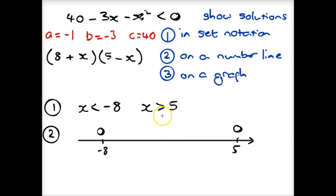If it was or equal to, we'd have a solid dot. And we want values less than negative 8 and greater than 5. So there it is represented on a number line.